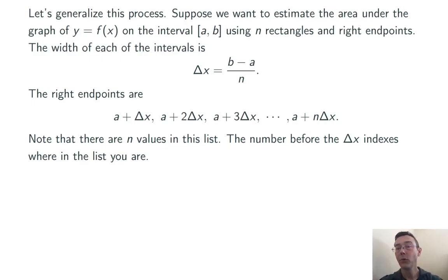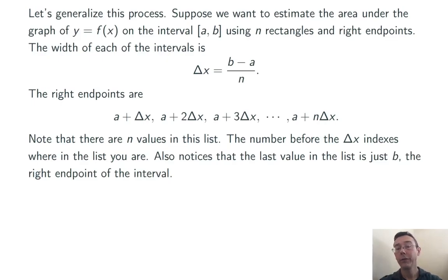Notice that there are n values on this list, because we're going to be making n rectangles. The number before the delta x indexes which rectangle you're on: a plus 1 delta x, a plus 2 delta x, and so on, corresponding to the first and second rectangle, and so on. Also notice that the last value, a plus n delta x, is just going to be b. And you can confirm that algebraically by plugging in b minus a over n for delta x in the last item in that list. That makes sense. b is just the rightmost endpoint in the big interval.